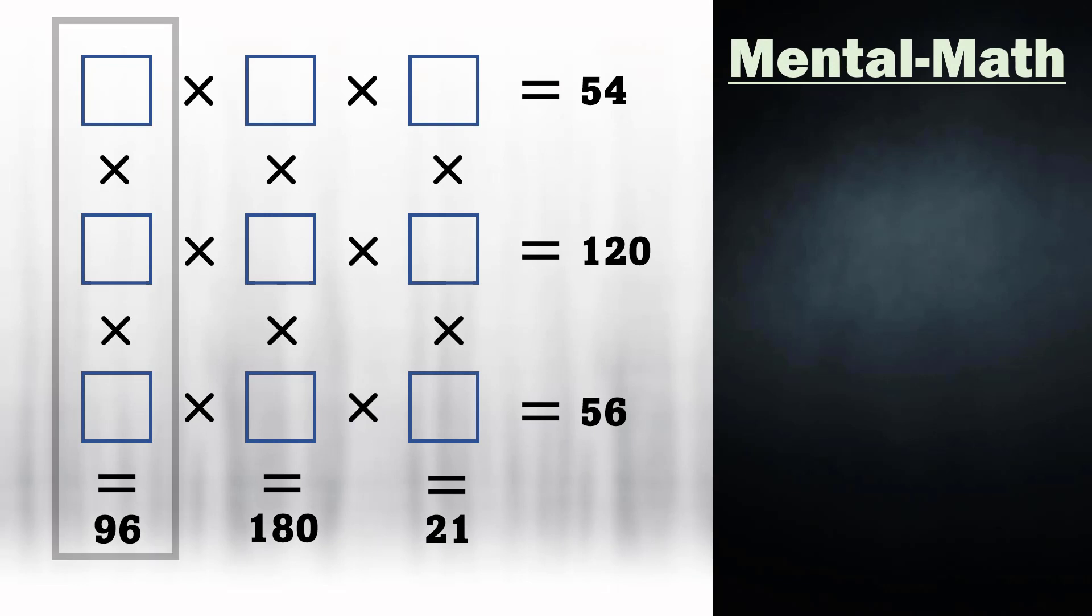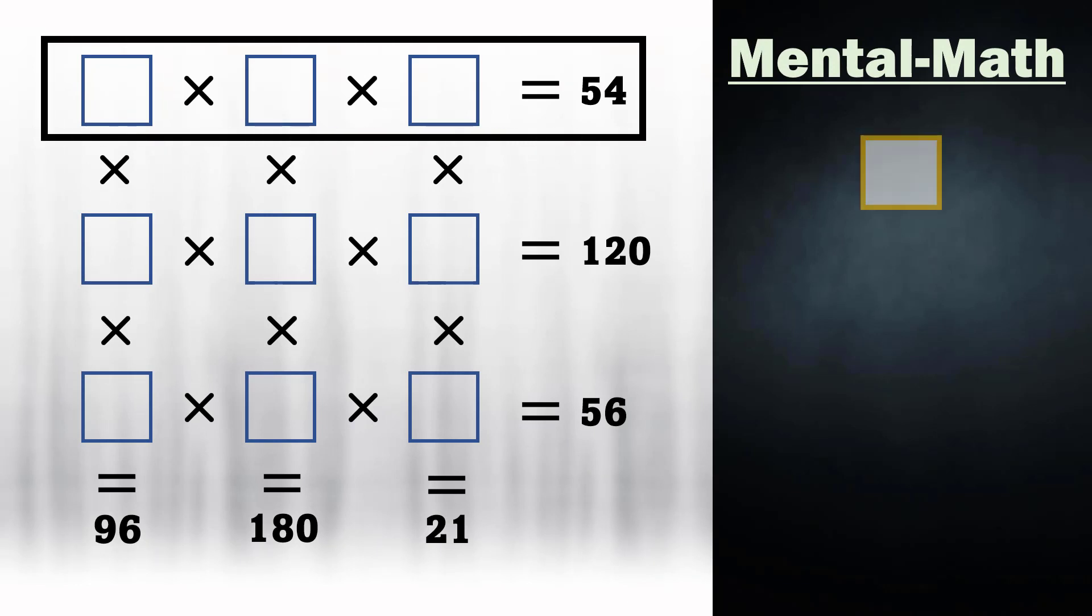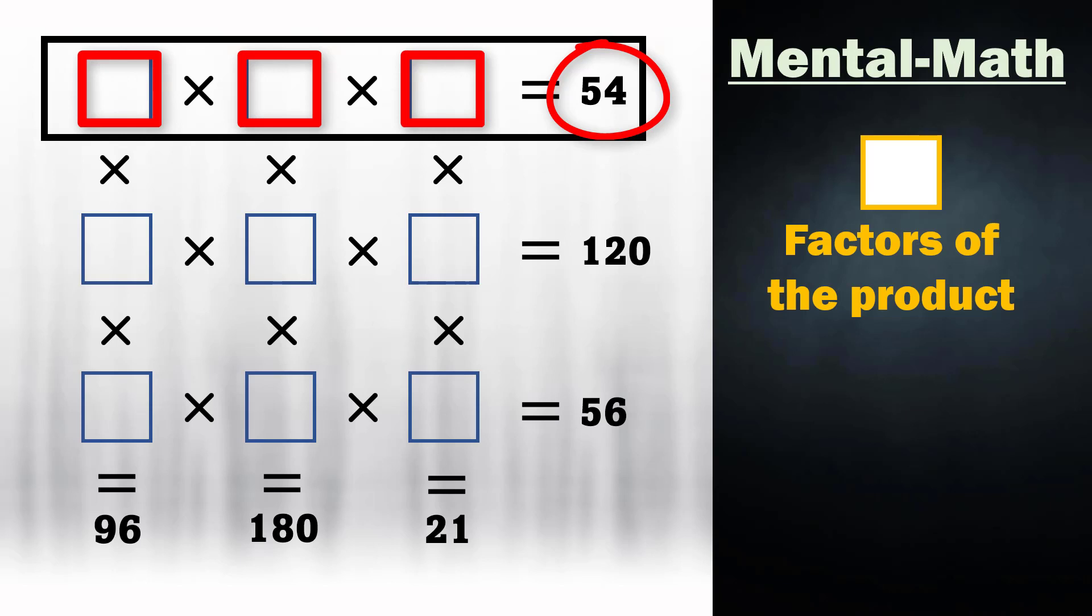In a column or in a row, these squares represent factors of that specific product. So this product value should be divisible by each of these numbers.